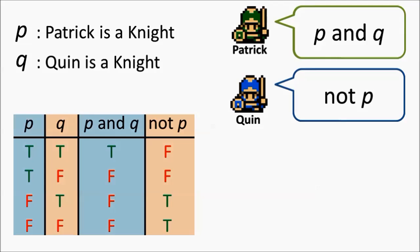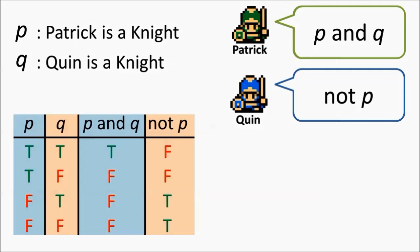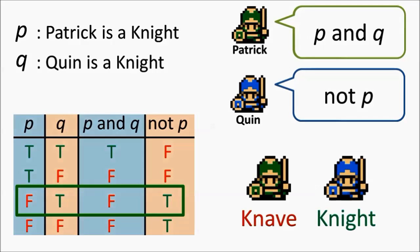We want the blue columns to agree with each other because this tells us that Patrick's identity as a Knight or a Knave is logically consistent with the statement he makes. Same goes for the orange columns. Whether Quinn is a Knight or a Knave, his statements must be logically consistent with his identity. As you can see, the only possibility is in the third row. Patrick is lying, and Quinn is telling the truth. All of the other options will contradict each other in some way, and they are not possible.